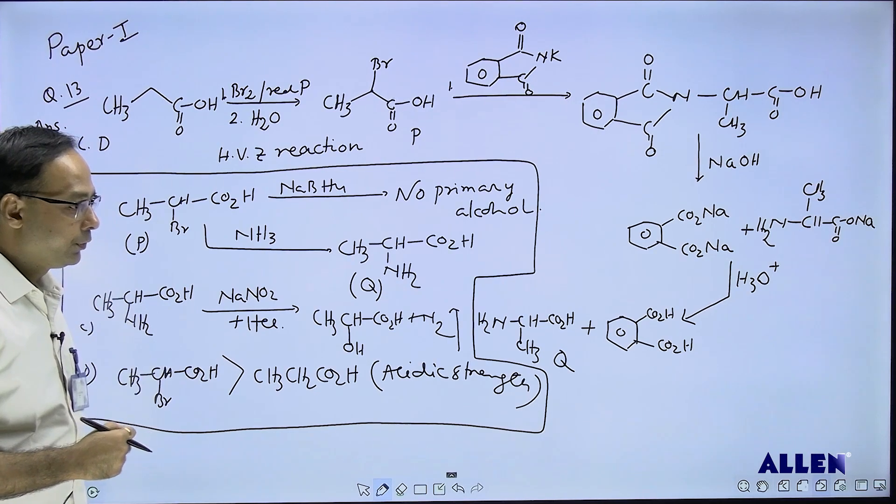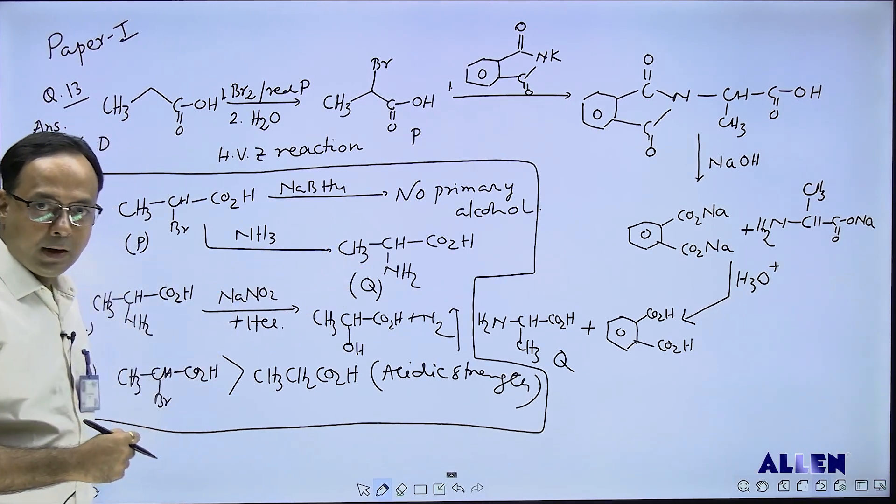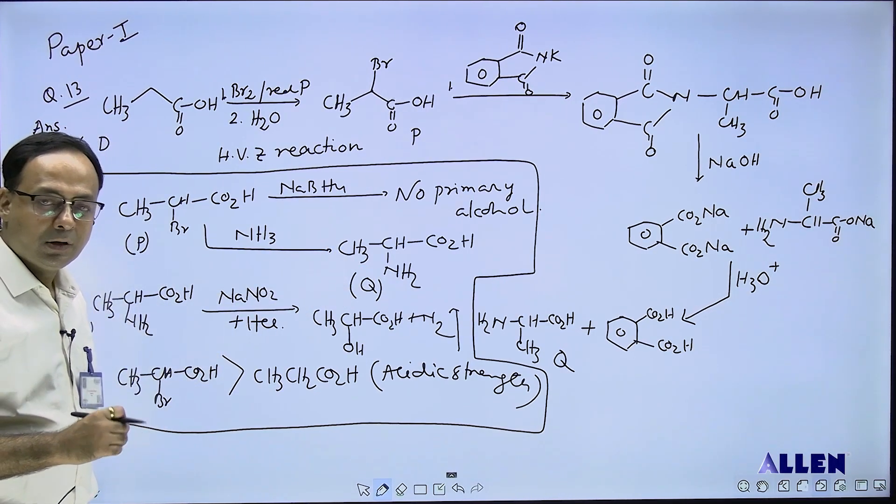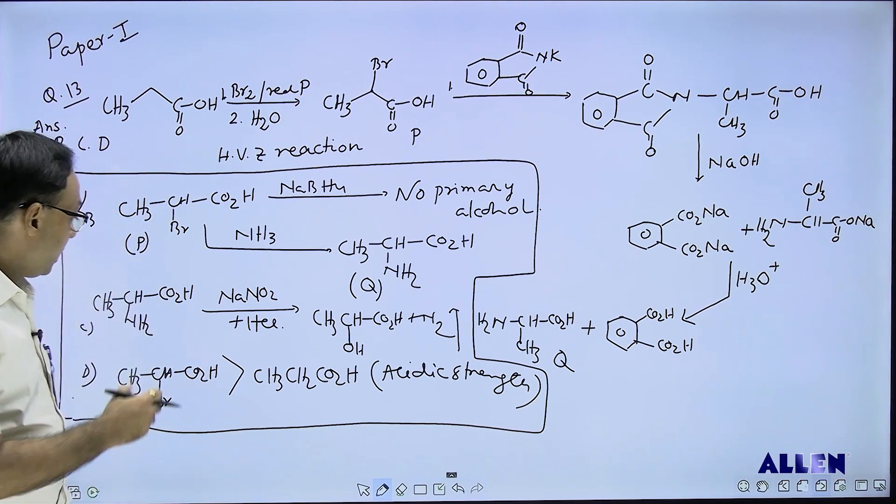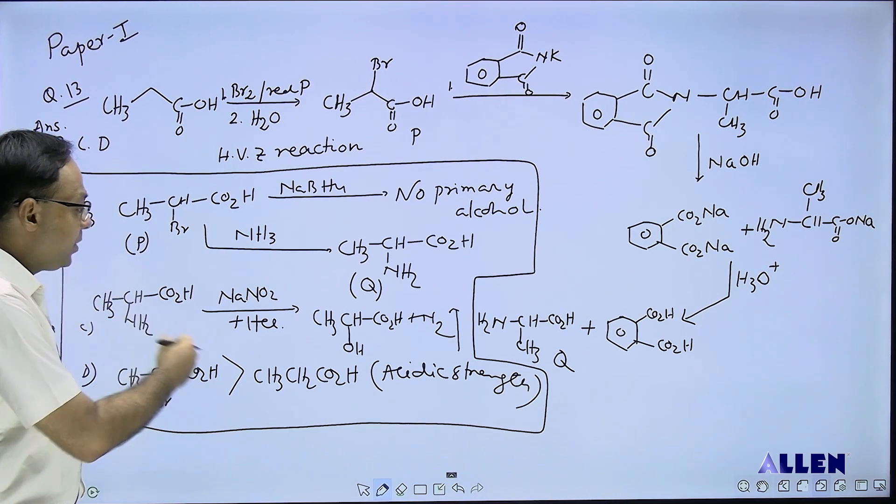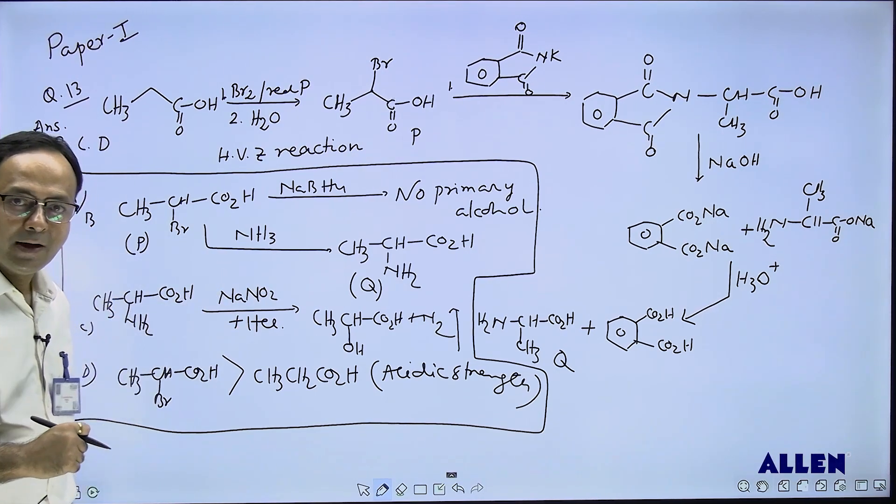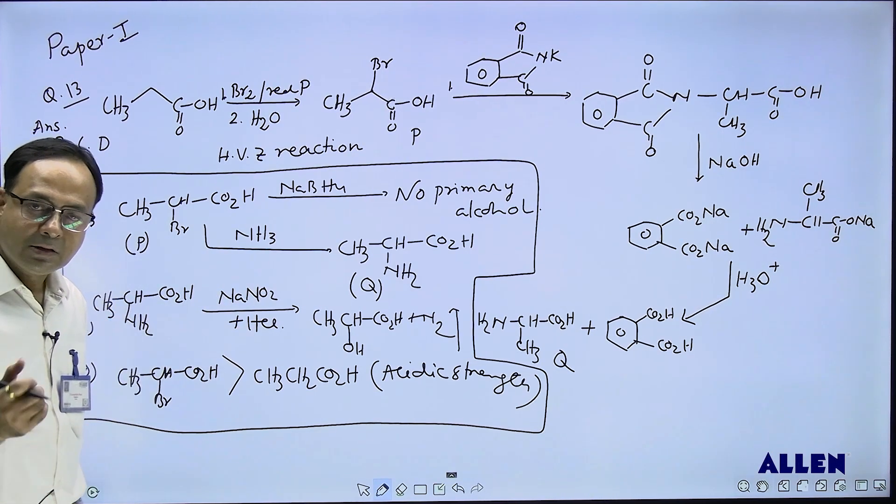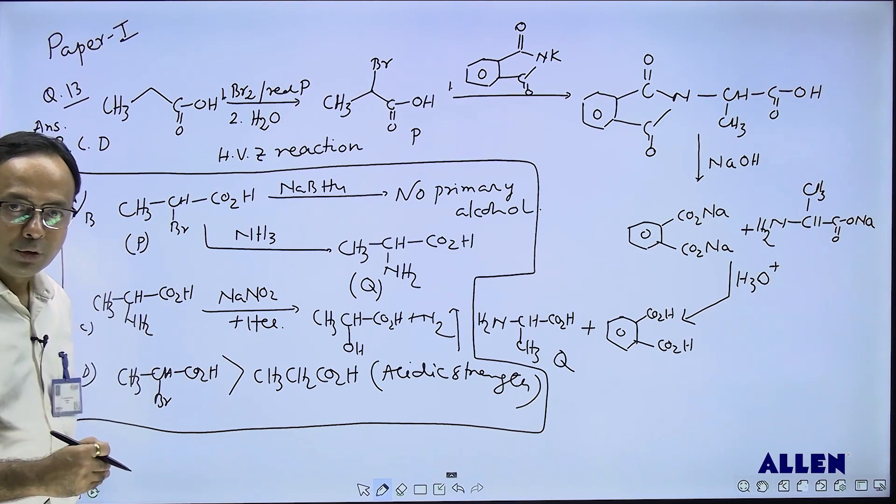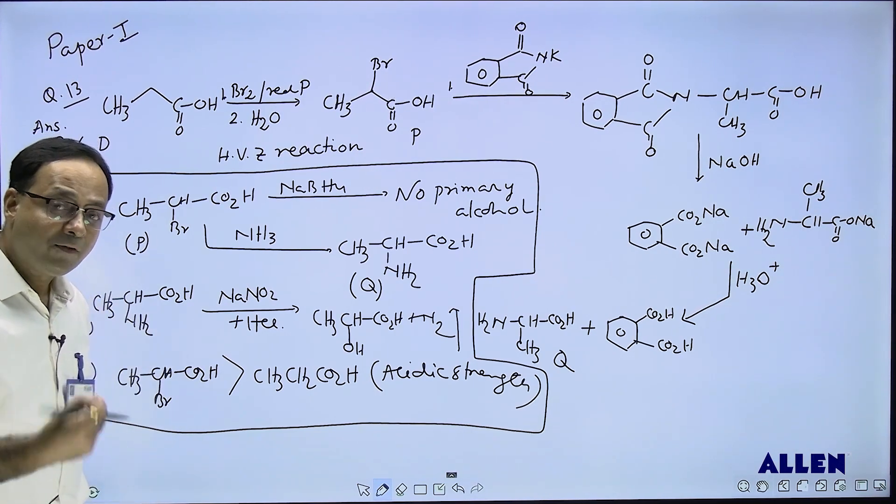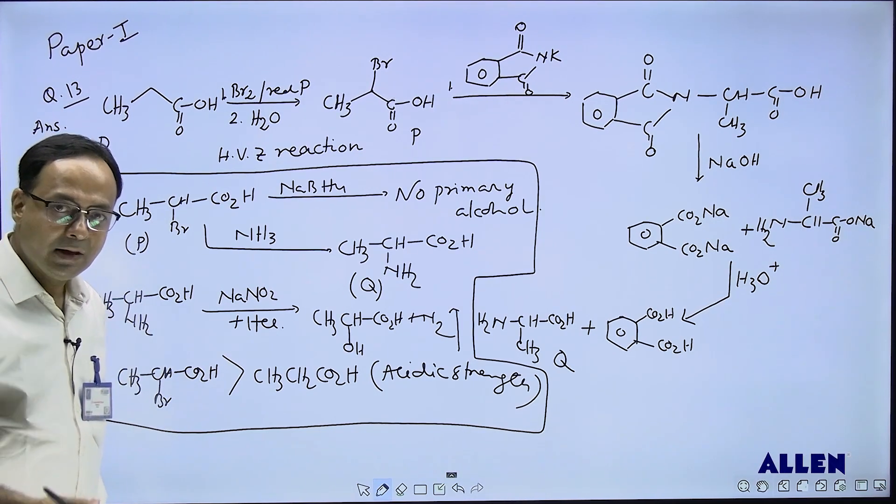After that, alpha amino acid undergoes reaction with NaNO2 plus HCl. This is the reaction of NH2 group where NH2 group is converted into N2+ and N2 gas is released. Alpha hydroxy acid, called lactic acid, is formed. Option third: compound Q when treated with NaNO2 plus HCl, nitrogen gas is released. That statement is correct.